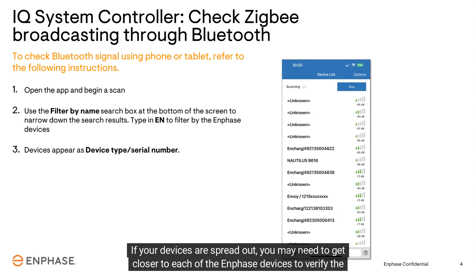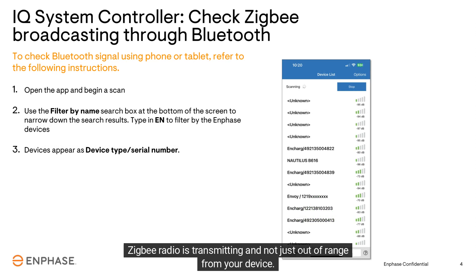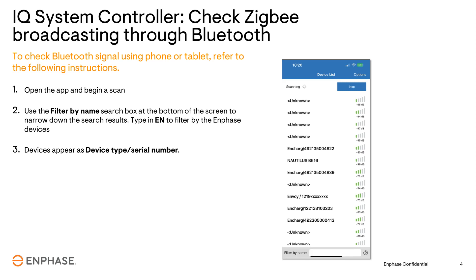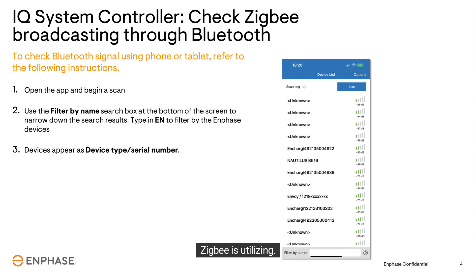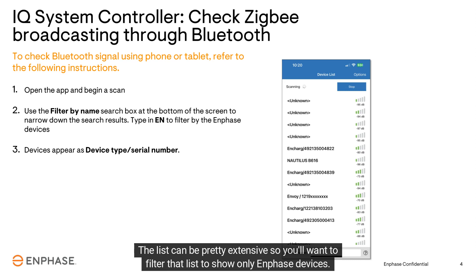Get closer to each of the Enphase devices to verify the Zigbee radio is transmitting and not just out of range from your device. You'll see a list of devices that are currently broadcasting a signal called BLE — Bluetooth Low Energy — which Zigbee is utilizing. The list can be pretty extensive, so you'll want to filter that list.